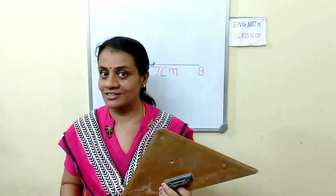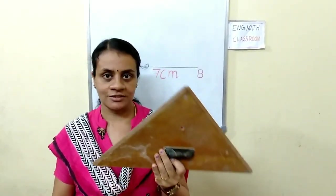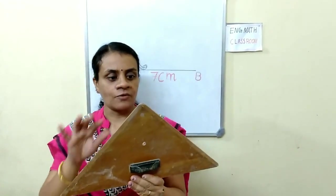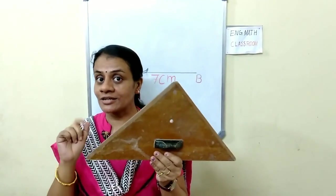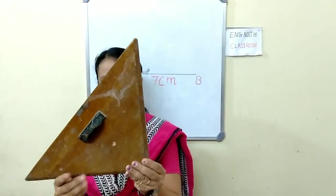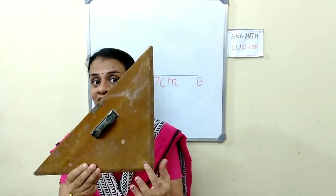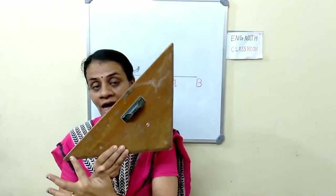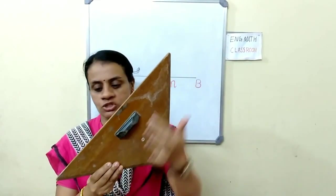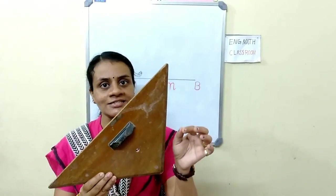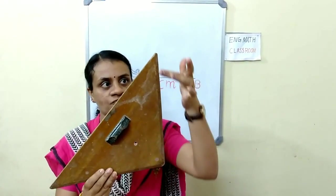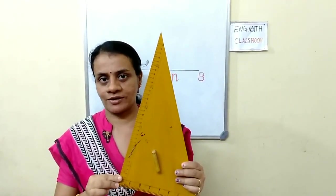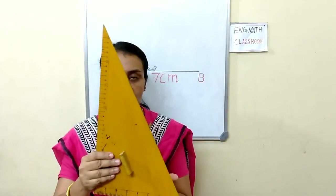Using set squares we can draw these angles. Look: this set square is like an isosceles triangle. These two sides are equal, this angle is 90 degrees, and since the two sides are equal, the two base angles are also equal — so each angle is 45 degrees. So this set square has angles 90, 45, and 45 degrees.